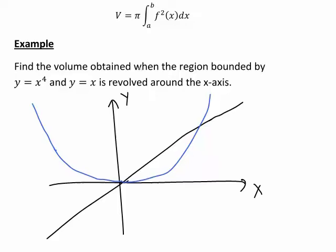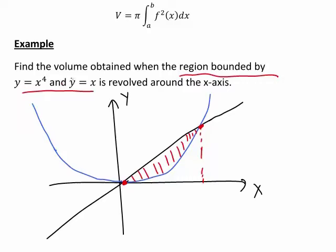What is the question actually asking us in relation to each of these graphs? It's asking for the volume obtained when the region bounded by these two graphs is revolved around the x-axis. So we're interested in this region here. An important thing to know is the actual x-values at the boundaries of this region. The first boundary point appears to be at x equals 0, which makes sense because both y equals x to the 4 and y equals x pass through the point (0, 0). But what is this other value of x?